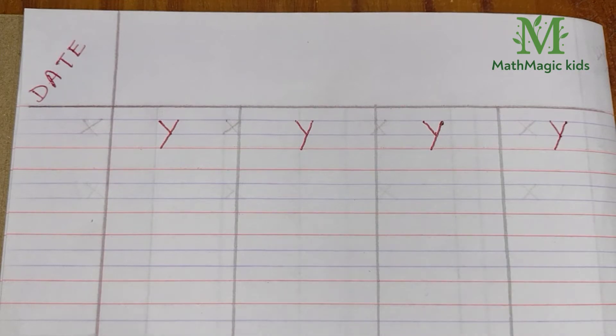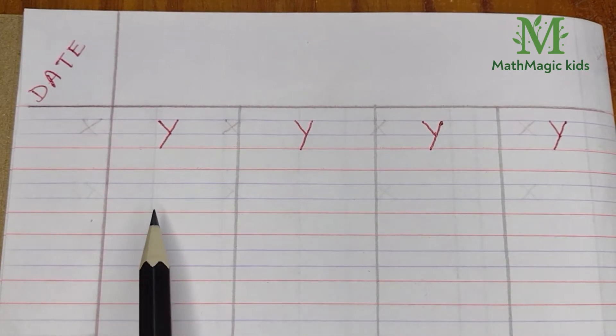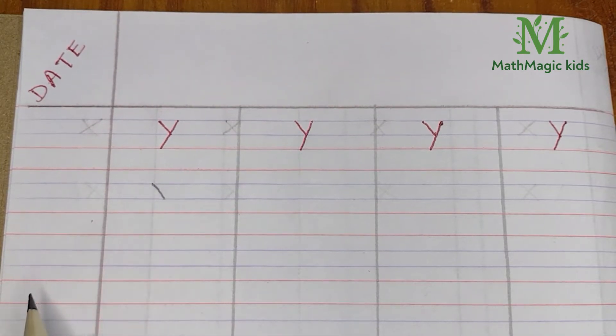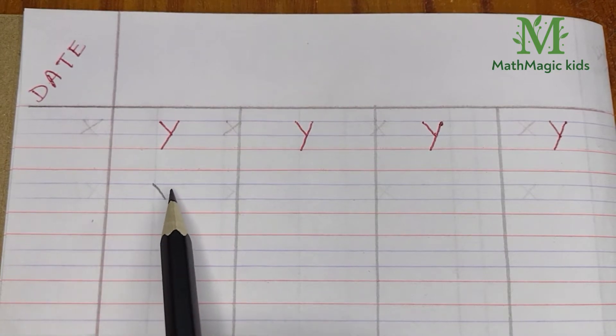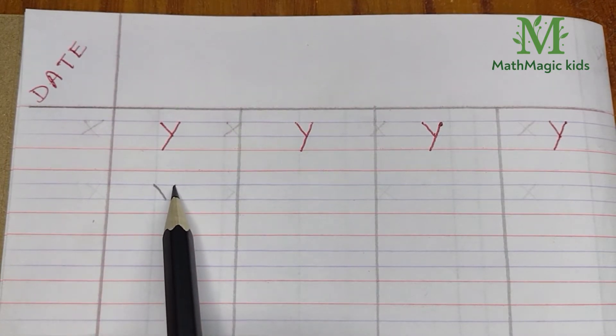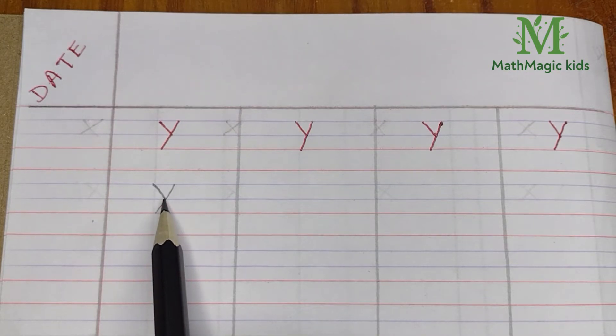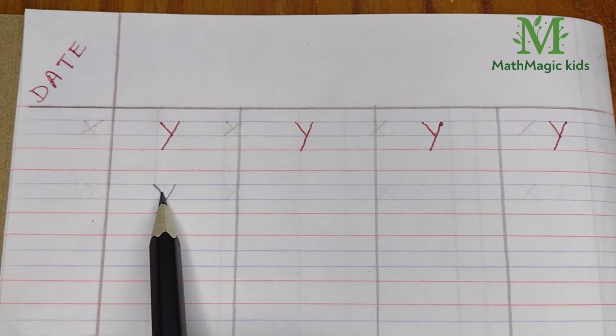To write Y, first we draw a small slanting line from 1st blue line till 2nd blue line. Now draw a long slanting line from 1st blue line till 2nd red line in such a way that it will touch the 1st slanting line.